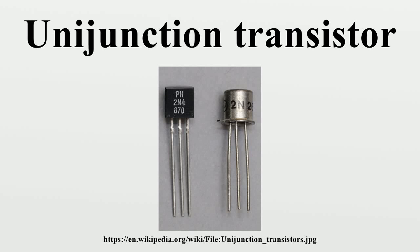A unijunction transistor is a three-lead electronic semiconductor device with only one junction that acts exclusively as an electrically controlled switch. The UJT is not used as a linear amplifier. It is used in free-running oscillators, synchronized or triggered oscillators, and pulse generation circuits at low to moderate frequencies.